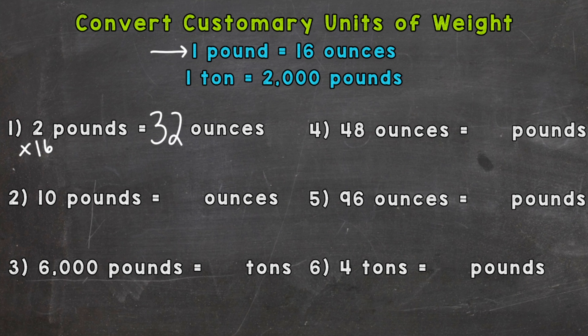Number two, we have 10 pounds equals how many ounces. So 16 plus 16 plus 16... 10 groups of 16, so we can do 10 times 16 to solve this, and 10 times 16 equals 160. So 10 pounds equals 160 ounces.